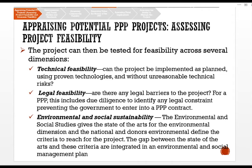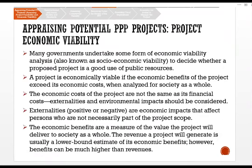Environmental and social sustainability: the environmental and social studies establish the state of the existing environment and define the criteria to be met for the project. The gap between the current state and the required criteria is integrated into an environmental and social management plan.